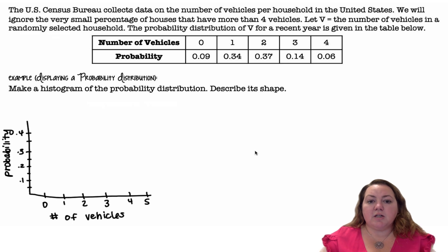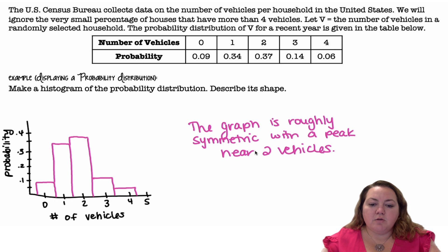Here's what our probability distribution is going to have probabilities along the y-axis. For 0, we're going up to 0.09, 1 is 0.34, 2 is 0.37, 3 is 0.14, and 4 is 0.06. The graph is roughly symmetric with a peak near two vehicles.